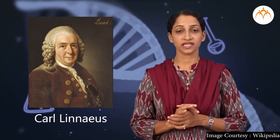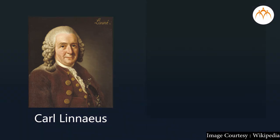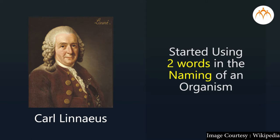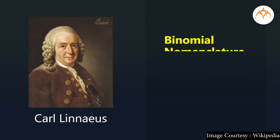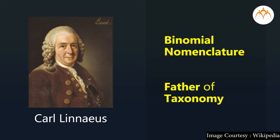The brinjal plant has other common names like wango, baingan, eggplant, etc. — meaning one plant has more than one name. This creates confusion while studying that plant. Therefore, Carl Linnaeus started a system of nomenclature which is more scientific. He started using two words in the name of an organism; this is called binomial nomenclature. Linnaeus alone has given names to almost 10,000 organisms, and for this important contribution he is called the father of taxonomy.